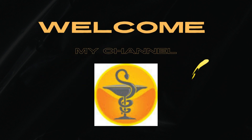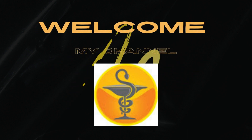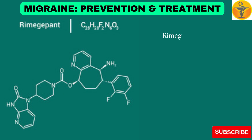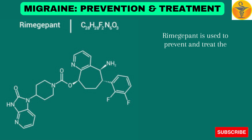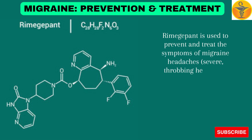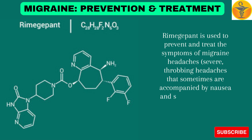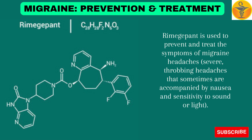Welcome to my channel Medicine God. Rimegepant is used to prevent and treat the symptoms of migraine headaches — severe, throbbing headaches that sometimes are accompanied by nausea and sensitivity to sound or light.